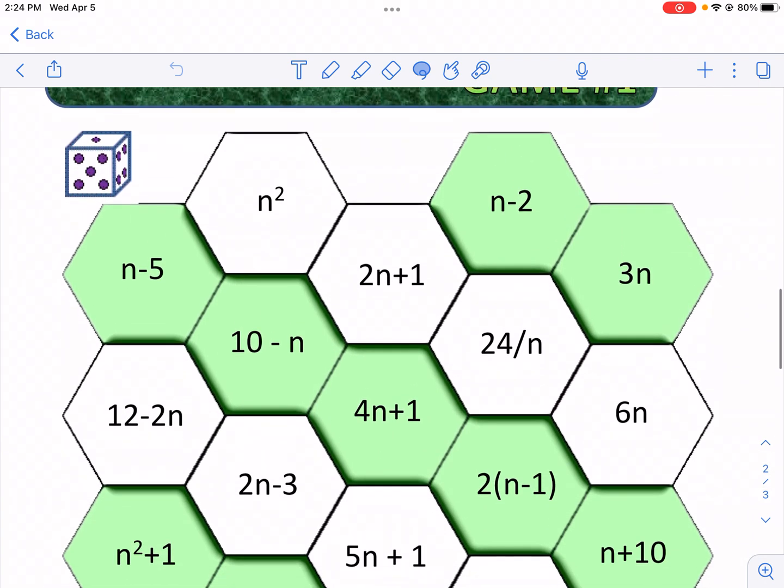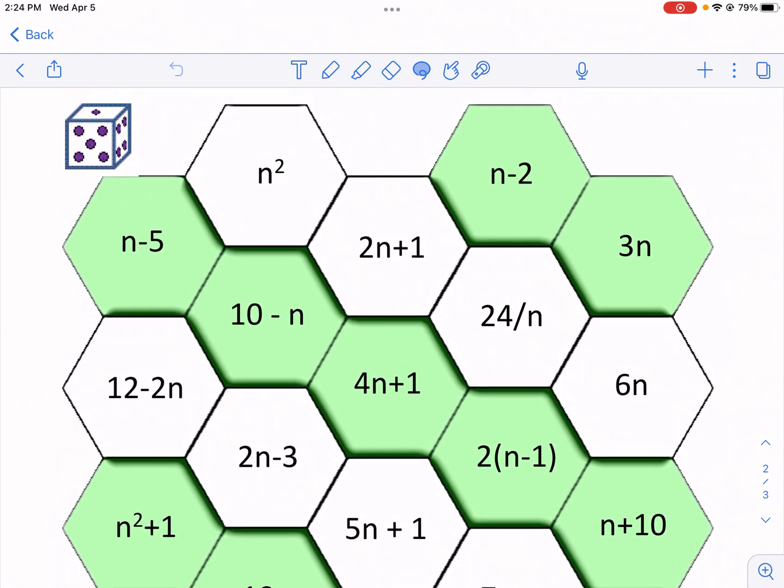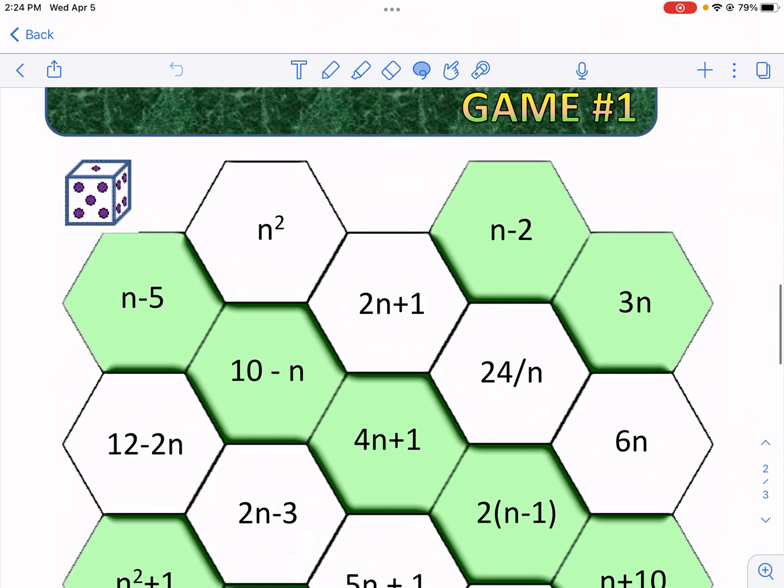So this is the game board. This is a pretty simple game. You'll just need one or two dice. Two dice will make it tougher because they'll be bigger numbers, but essentially what you're doing here is after rolling dice, you're gonna get a number and you're gonna pick out one of the expressions to evaluate.